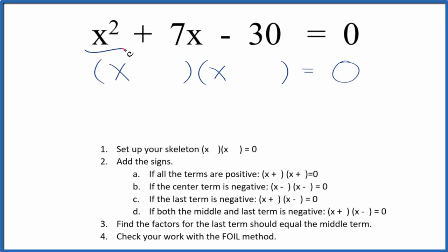Let's factor the equation x² + 7x - 30 using these guidelines. First, we'll set up a skeleton equation.